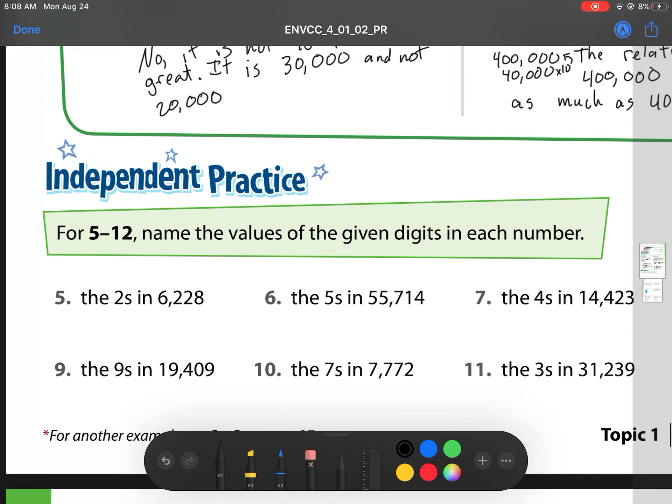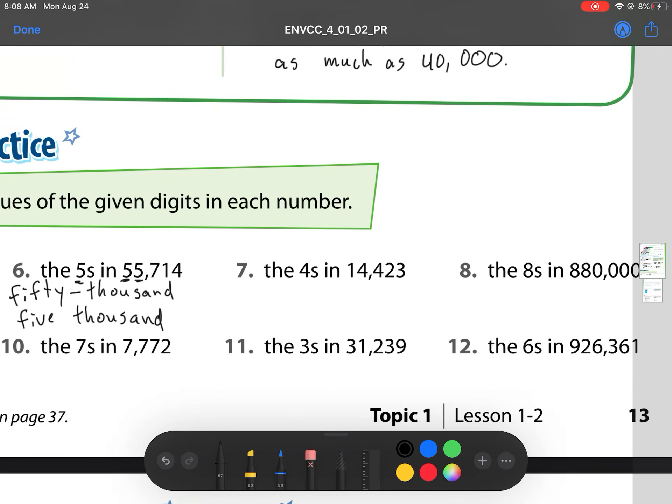On to number five. Name the values of the given digits in each number. So we have twos. So that's my two hundreds and then it's 20. My fives, I'm going to write out, that's 50,000 and 5,000. Fours. We're going to slip back and forth between writing the numeral and written form. So it's 4,000 and then 400.